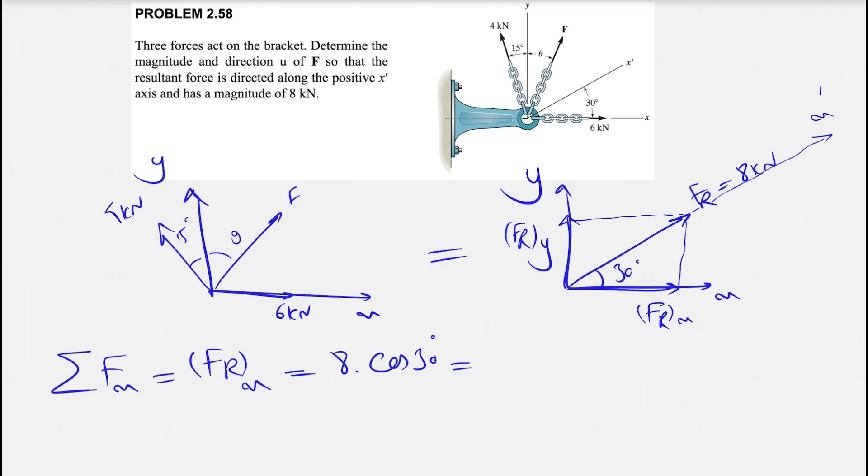So first of all, if we look at the left diagram, we have that in x direction, we have this 6 kN force. We also have the x component of the 4 kN force, which is negative. And we also have the x component of the force with theta. So we have F sine of theta, and as the x component for the 4 kN, as we can see, the force is negative, the x component. So we have minus 4 times sine of 15.